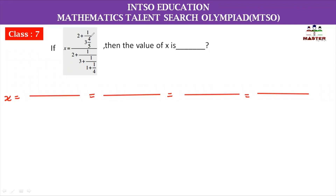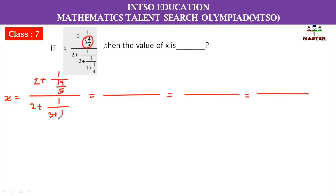First we will work on the numerator. The numerator is 2 plus 1 whole divided by 3 plus 1 whole divided by 3 plus 1 whole divided by 1 plus 1 by 4. So first we will simplify.